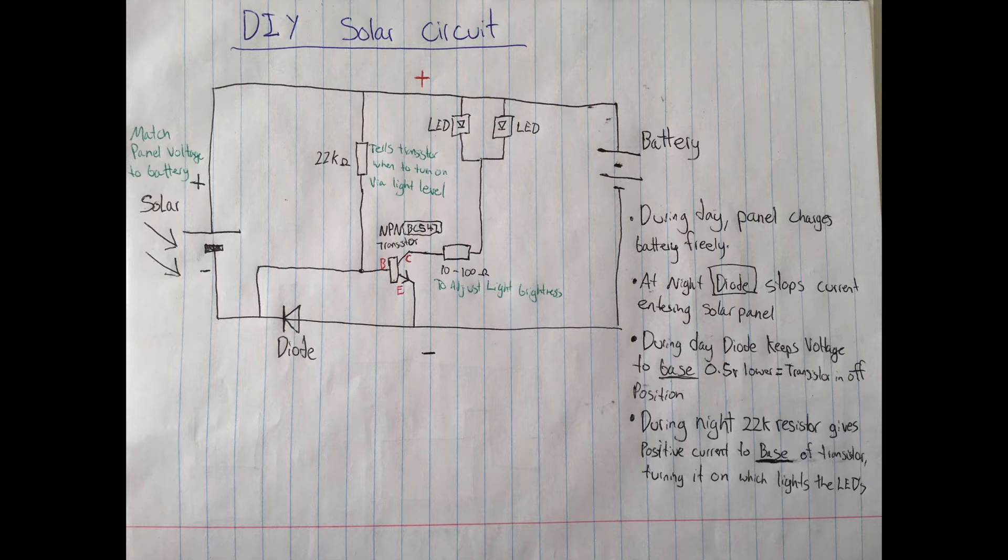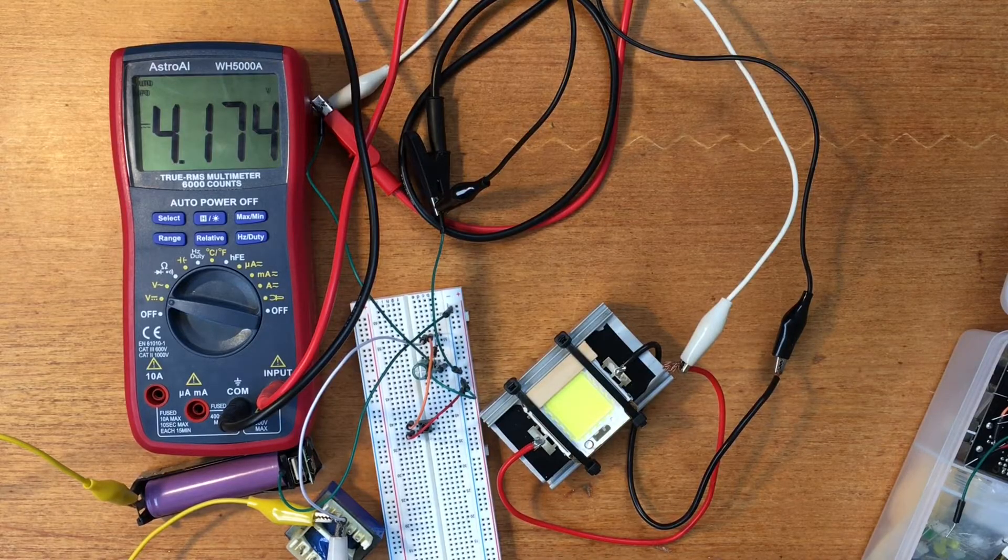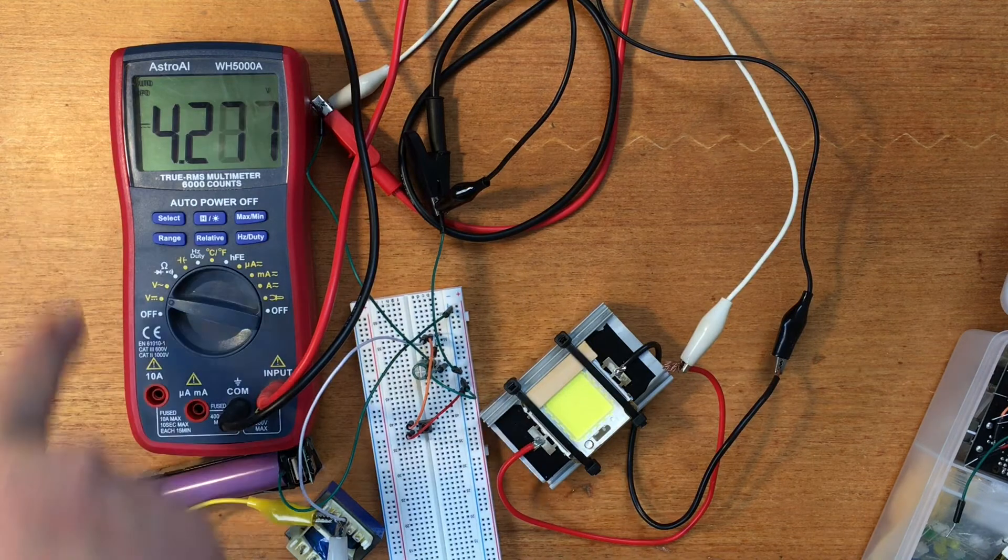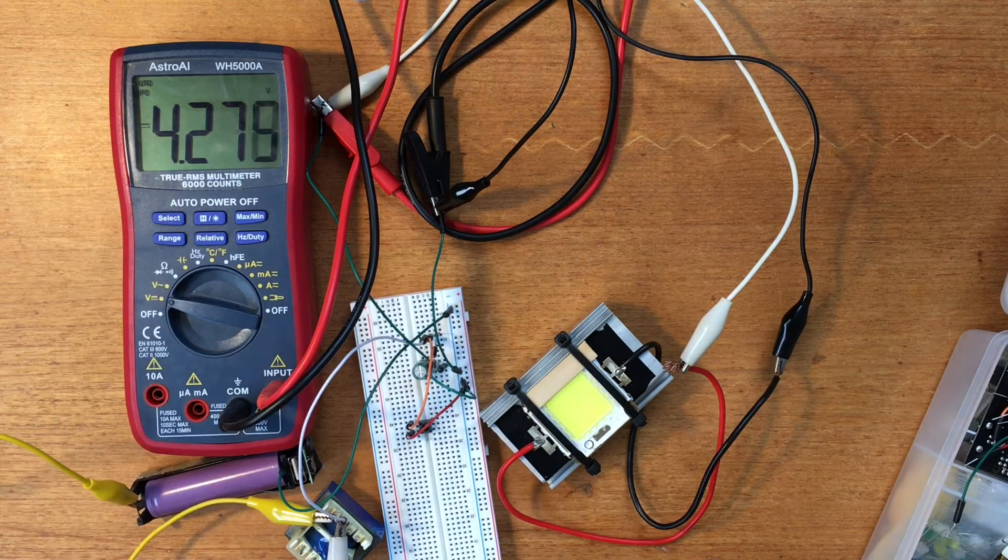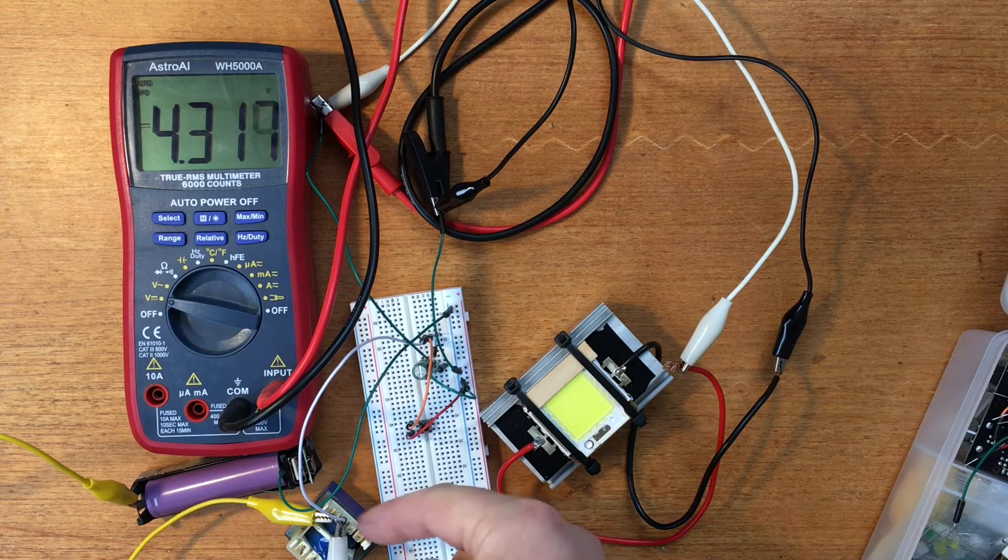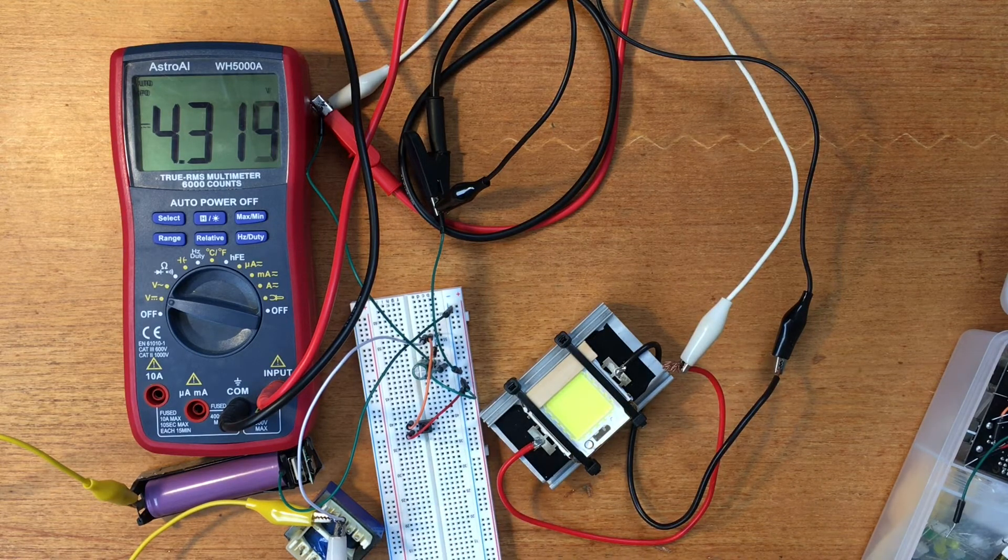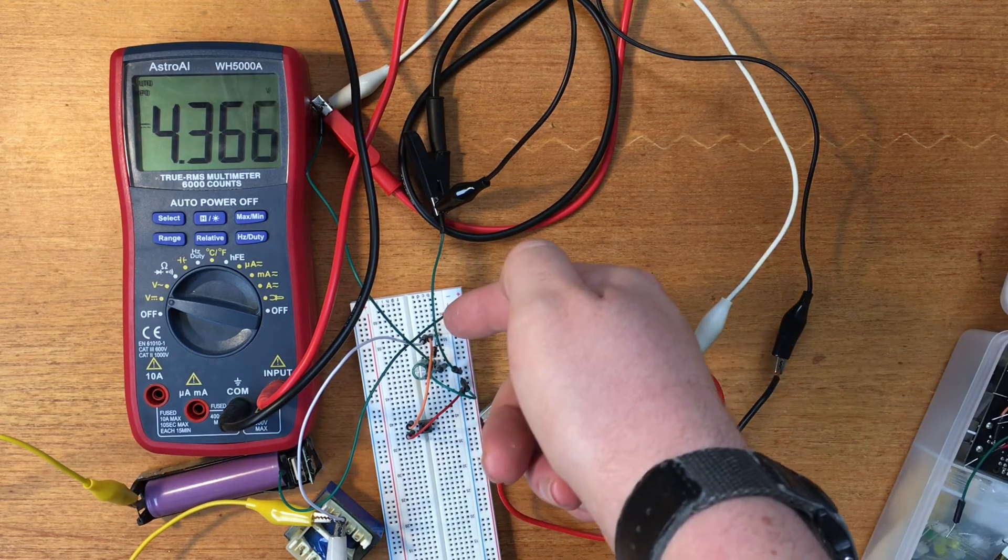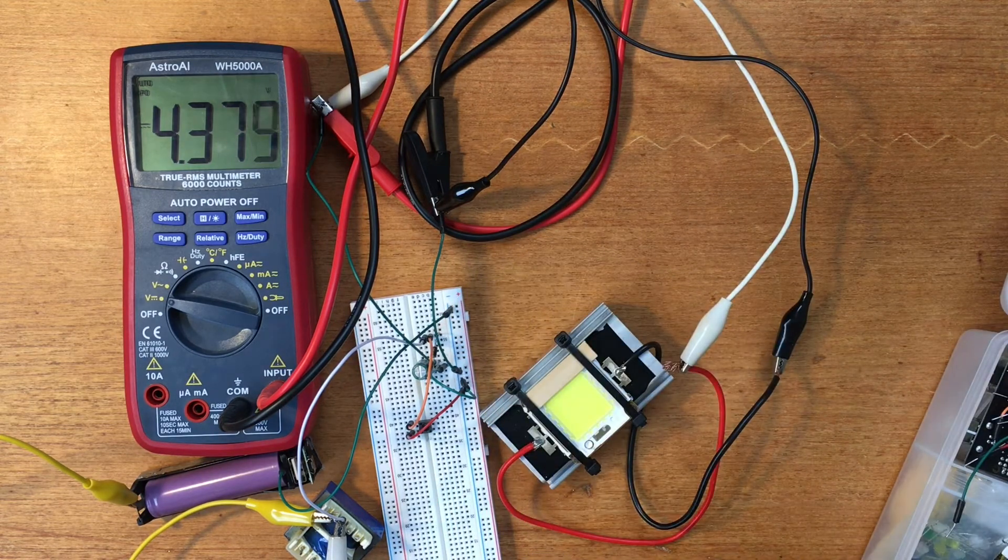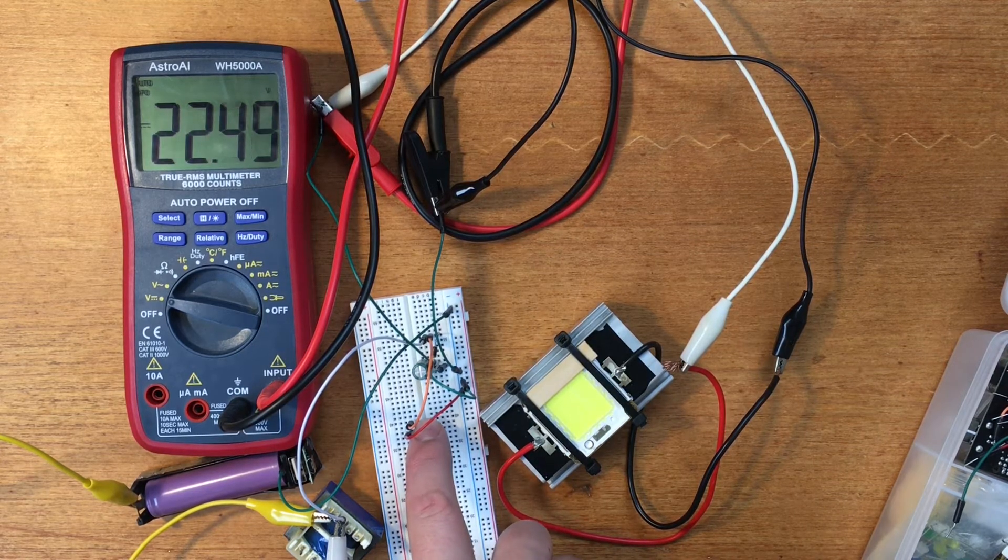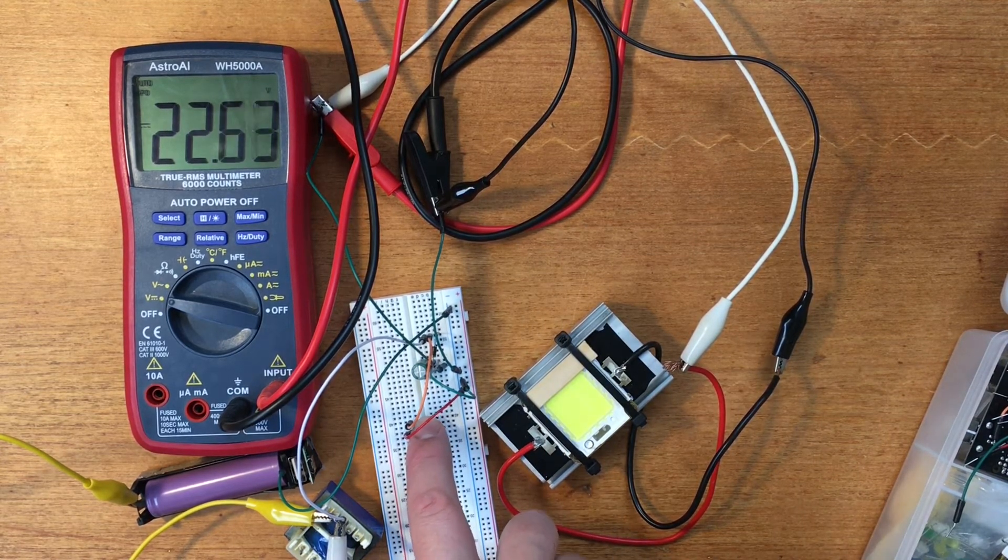I've put together my own version of the boost converter. Right now it's showing around 4.2 volts - that's the voltage of the lithium cell here. I've run it through an inductor, which is just the coil of this transformer, got a capacitor, a diode, and a switch. When I hit the switch it should increase the voltage, and there we go, it's flashing this 100 watt LED.